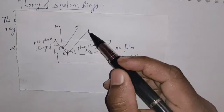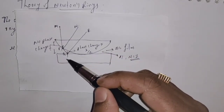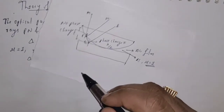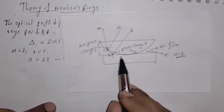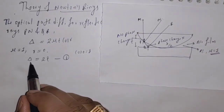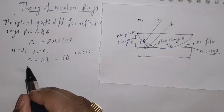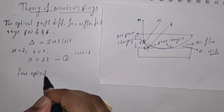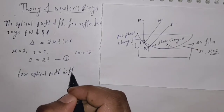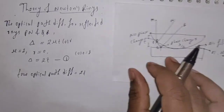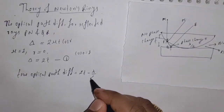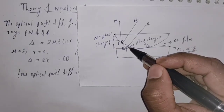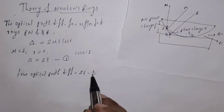Since the light wave Q, R gets reflected from an optically denser medium, we introduce an additional path difference of lambda by 2. Therefore, the true optical path difference becomes 2T minus lambda by 2, because there is a path difference of lambda by 2 at that reflection.